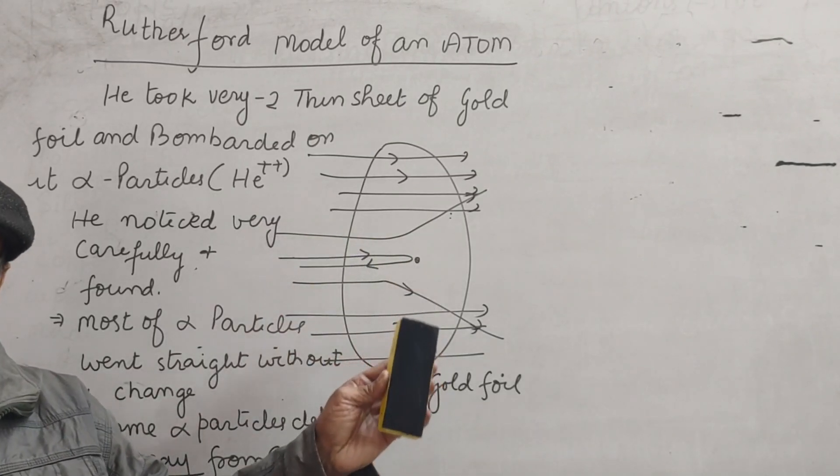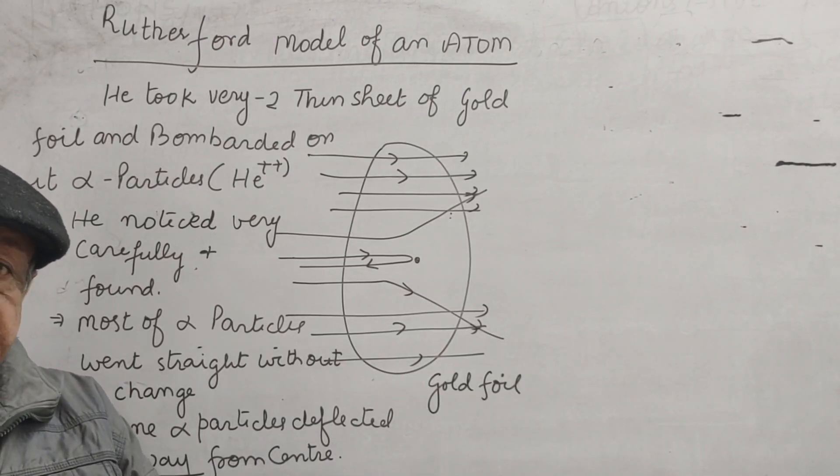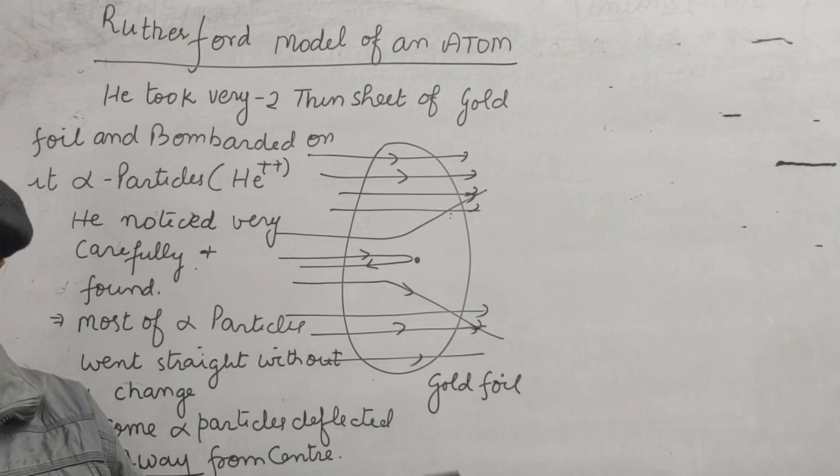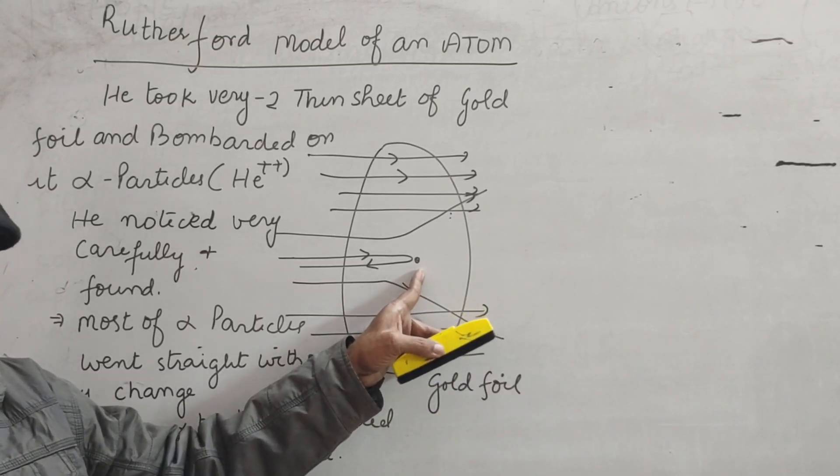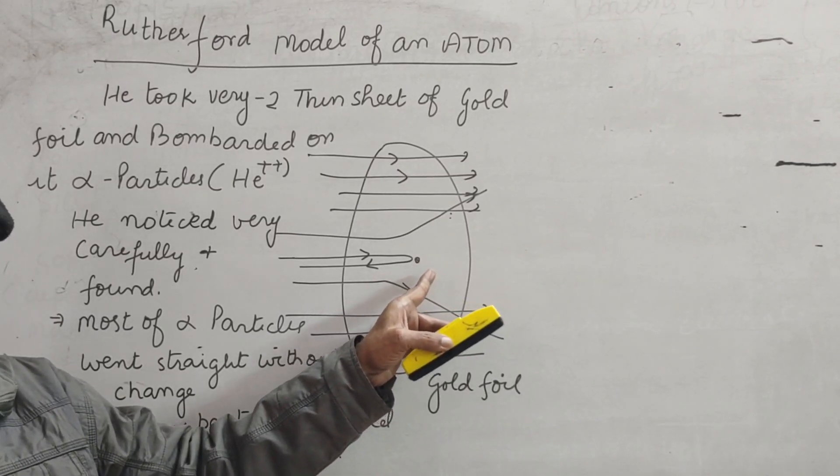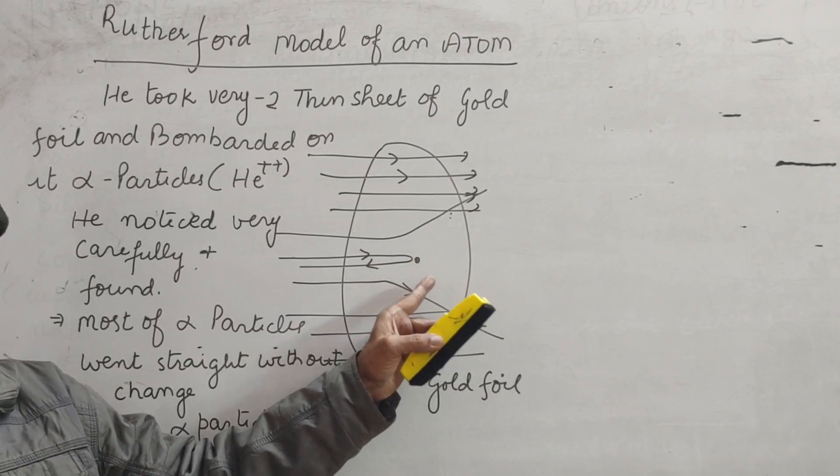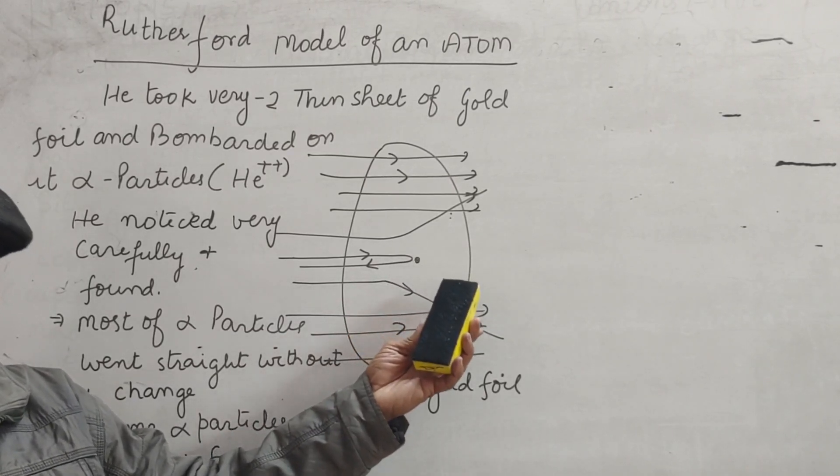As alpha particles are charged particles, deflecting away, moving in opposite directions, showing that in the center of atom was some positive charge point there.